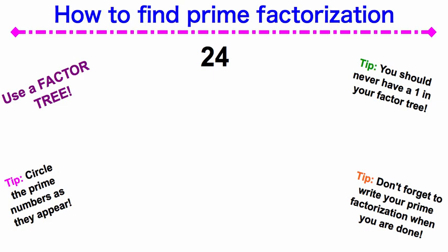How do we find prime factorization? Well, first and foremost, we use a factor tree. So we're going to make a factor tree for the number 24, and a factor tree looks like this.